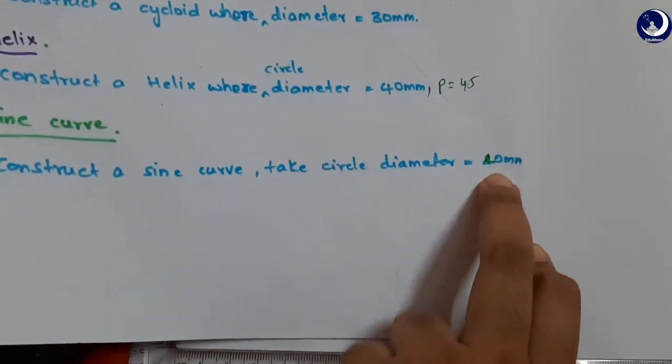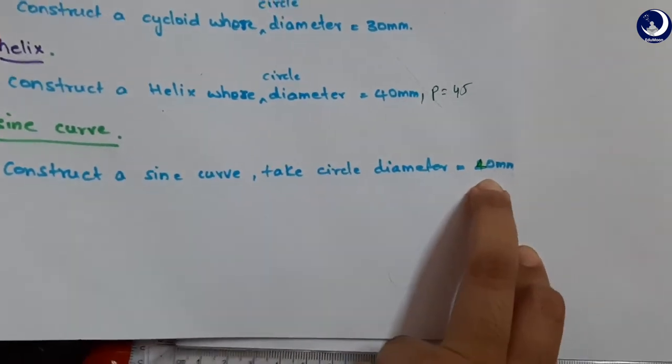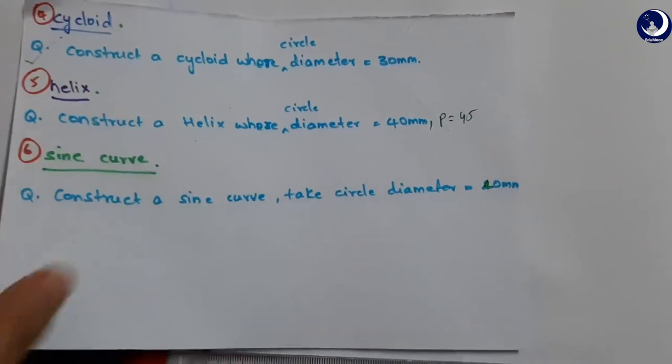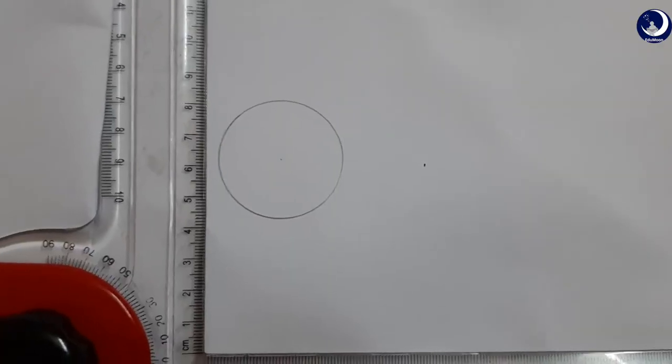So I am going to take the diameter as 40 mm, as of now I don't have a pro circle, so it's difficult for me to construct a circle with 20 mm, like this.